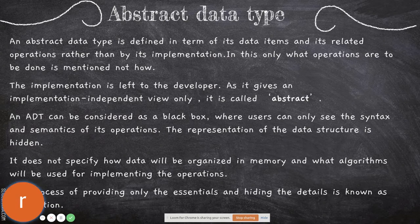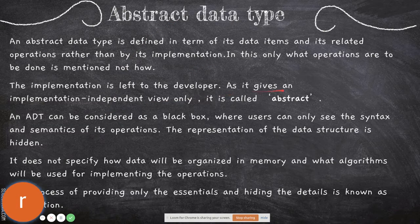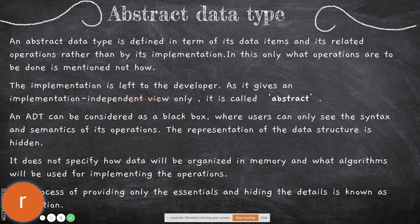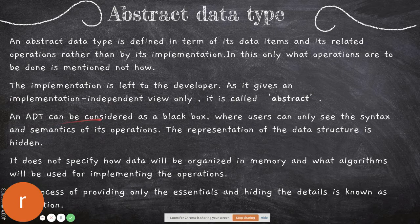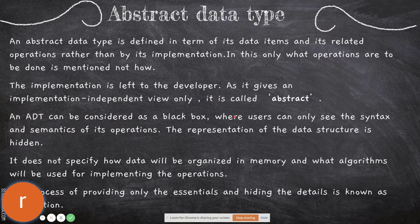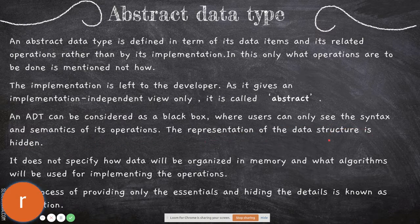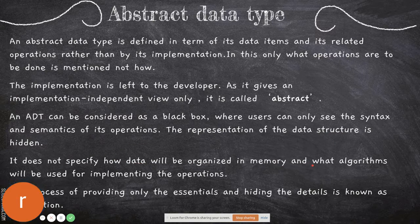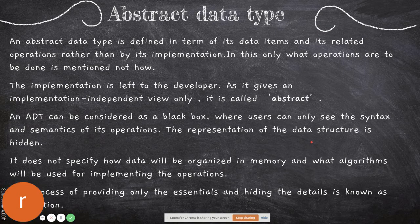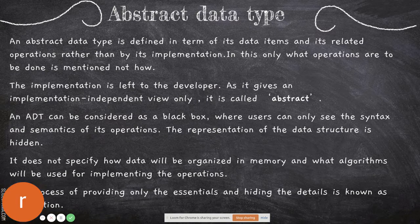The actual technique will not be given. It is up to the developer to use a data structure of their own choice and develop the operations mentioned. The implementation is left to the developer. Since it gives an implementation-independent view only, it is called abstract. In another way, an entity can be considered as a black box where users can only see the syntax and semantics of its operations. The representation of the data structure is hidden. It does not specify how data will be organized or stored in memory, or what algorithms will be used for implementing those operations.